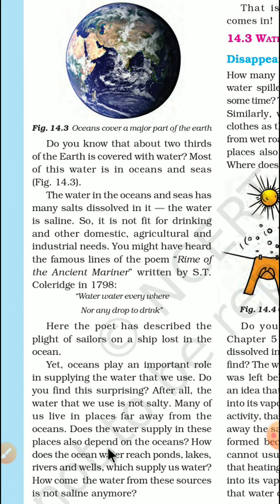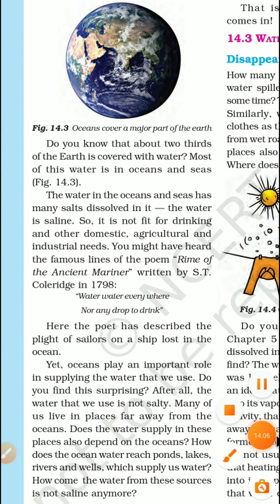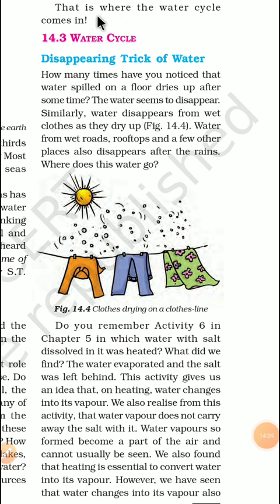How does ocean water reach the ponds, lakes, rivers, and wells which supply us water? Jahaan se hume paani milta hai, wahaan pe ocean ka paani kaise jaata hai? How come the water from these sources is not saline anymore? Hame jo paani milta hai, woh khara nahi hai — woh toh meetha paani hai. That is where the water cycle comes in.